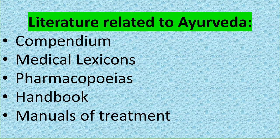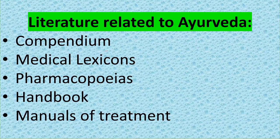Medical lexicons are a word book of medical science. In pharmacopoeia, the official publication contains a list of medicinal drugs with their effects and directions for their use.